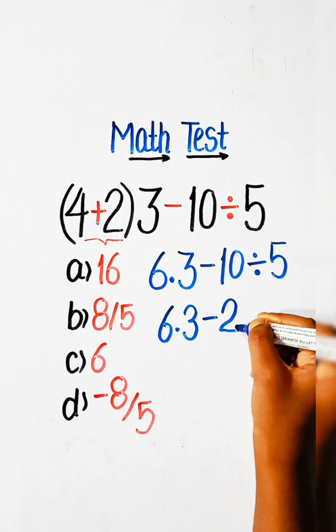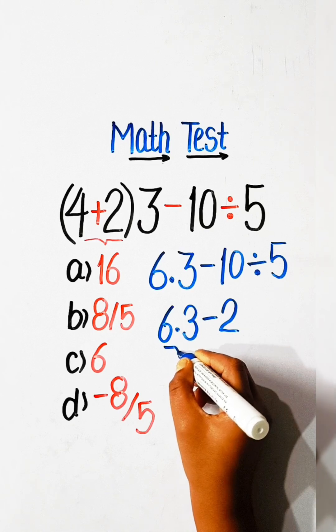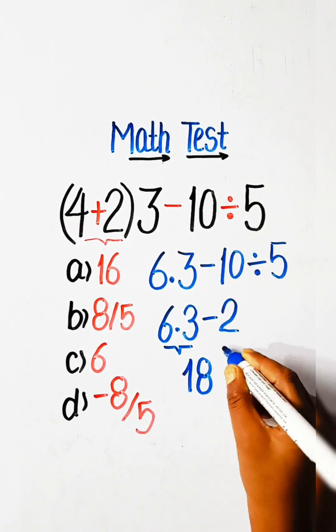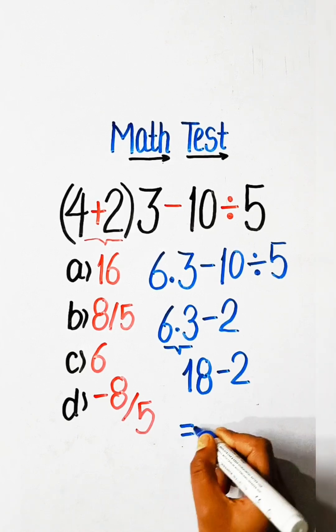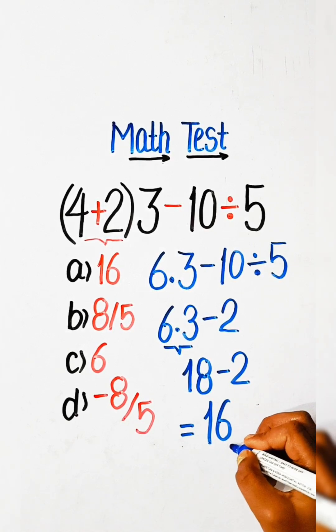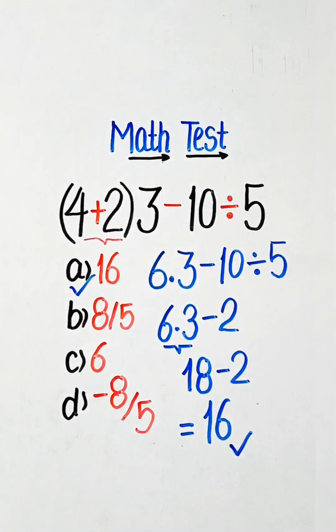So we can write here 6 multiply by 3 minus 10 divide by 5 is 2. And 6 multiply by 3 is 18 minus 2 is equals to 16. So 16 is our correct answer, option a will be the correct answer.